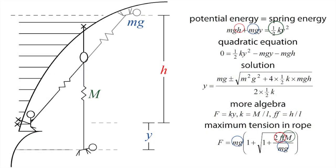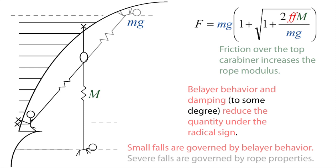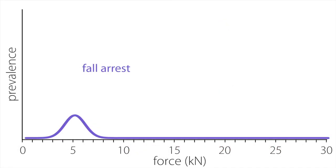As mass, fall factor, and rope modulus increase, the load applied during fall arrest increases slightly. Within reason, the more dynamic the belay, and thus the greater proportion of the fall energy that can be transformed into heat and motion of the belayer, the lower the applied load.